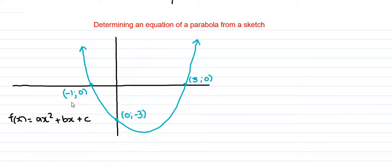The equation of a parabola is in the form f(x) equals ax squared plus bx plus c.